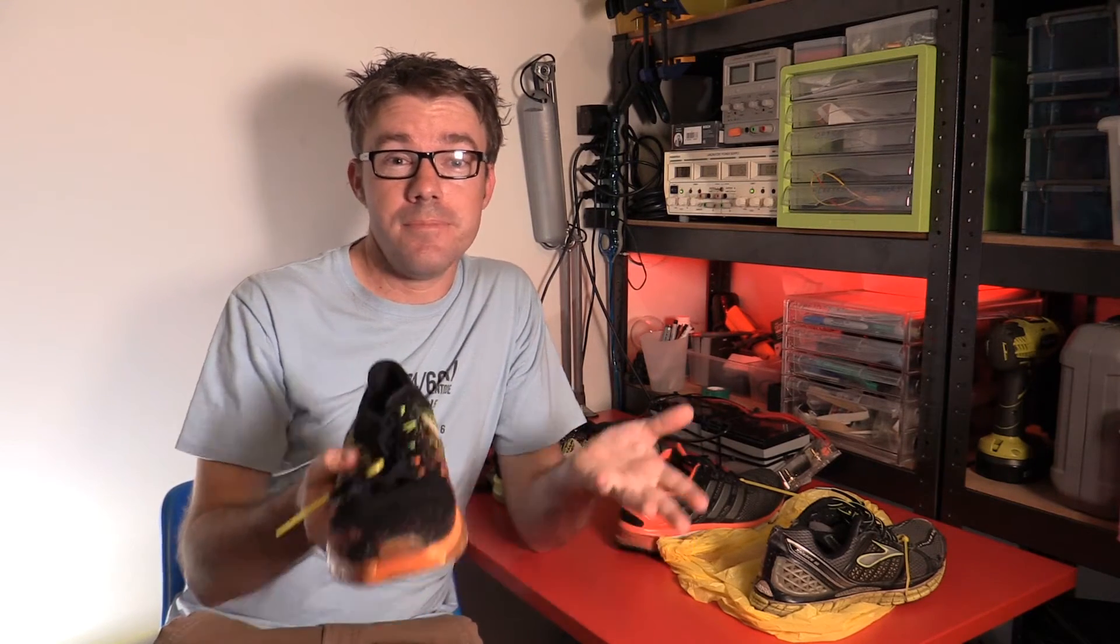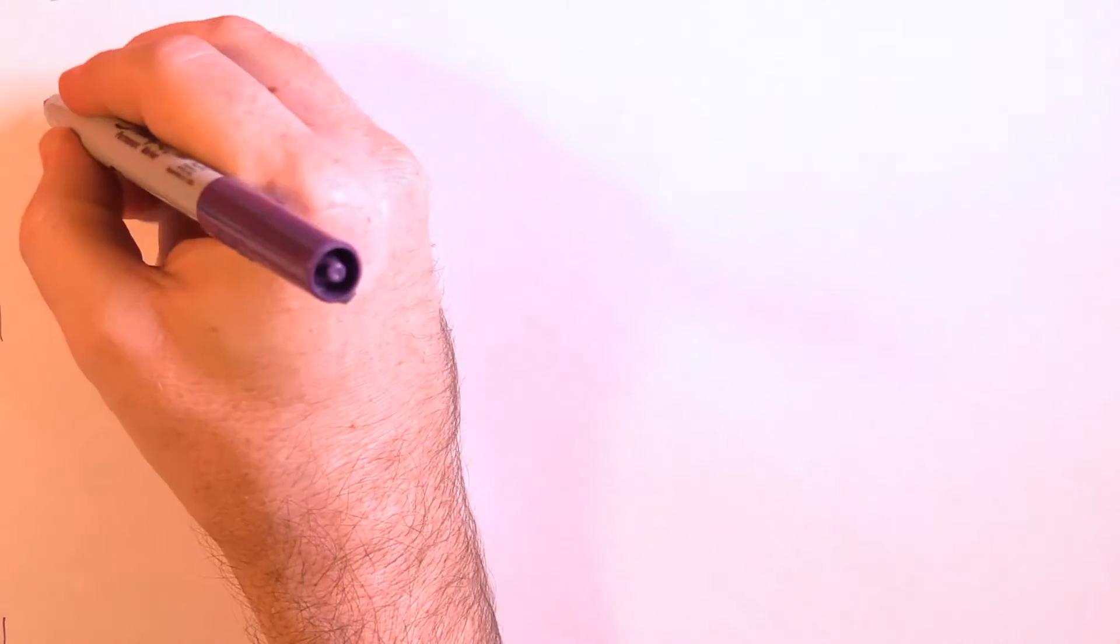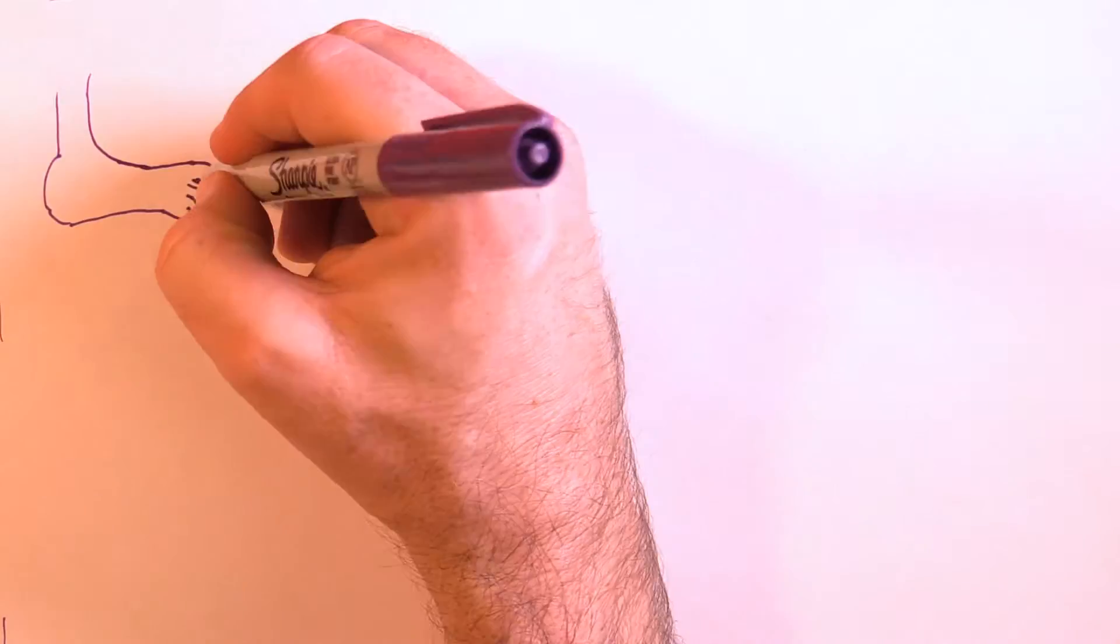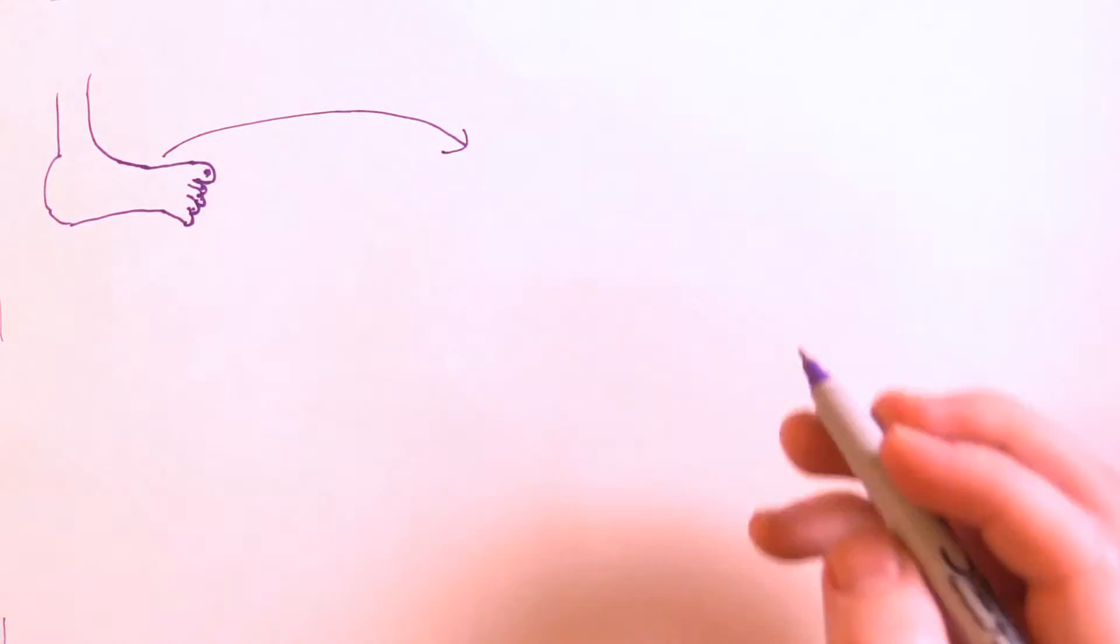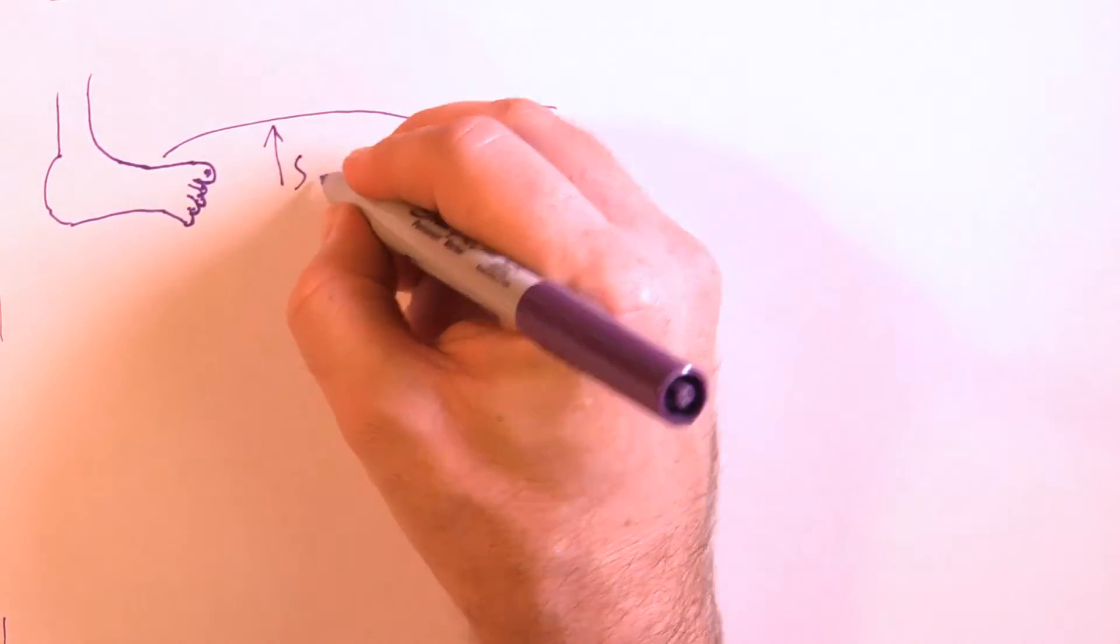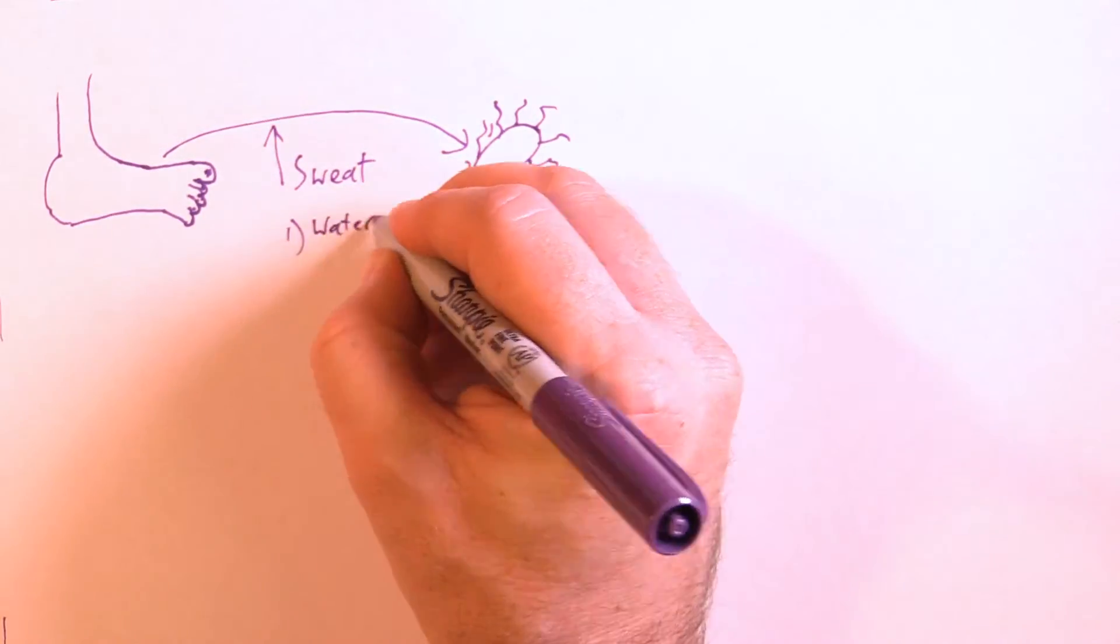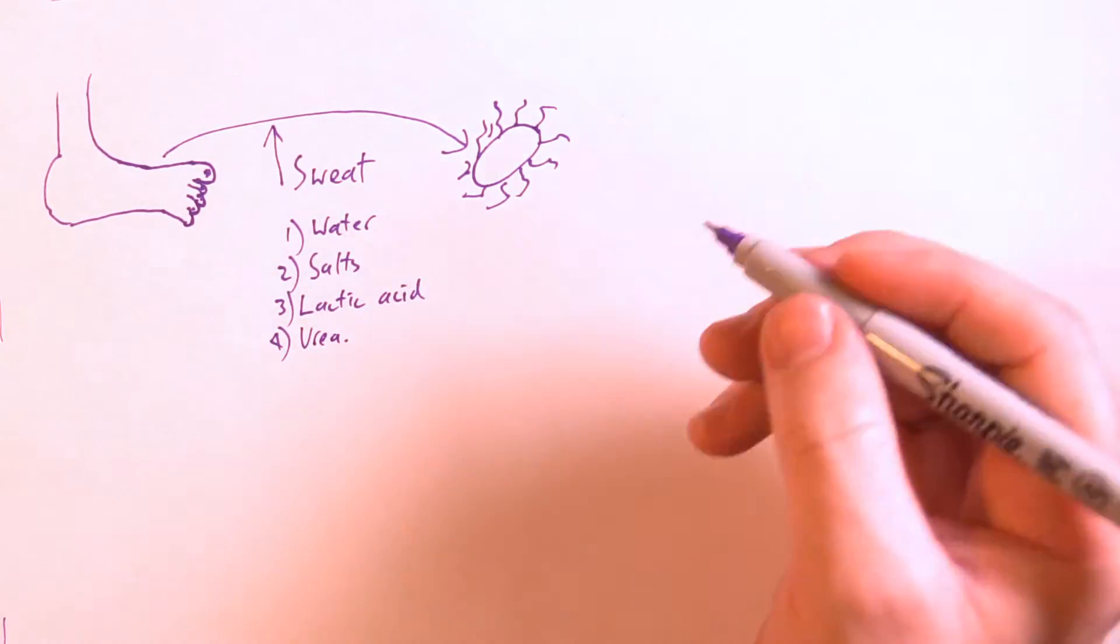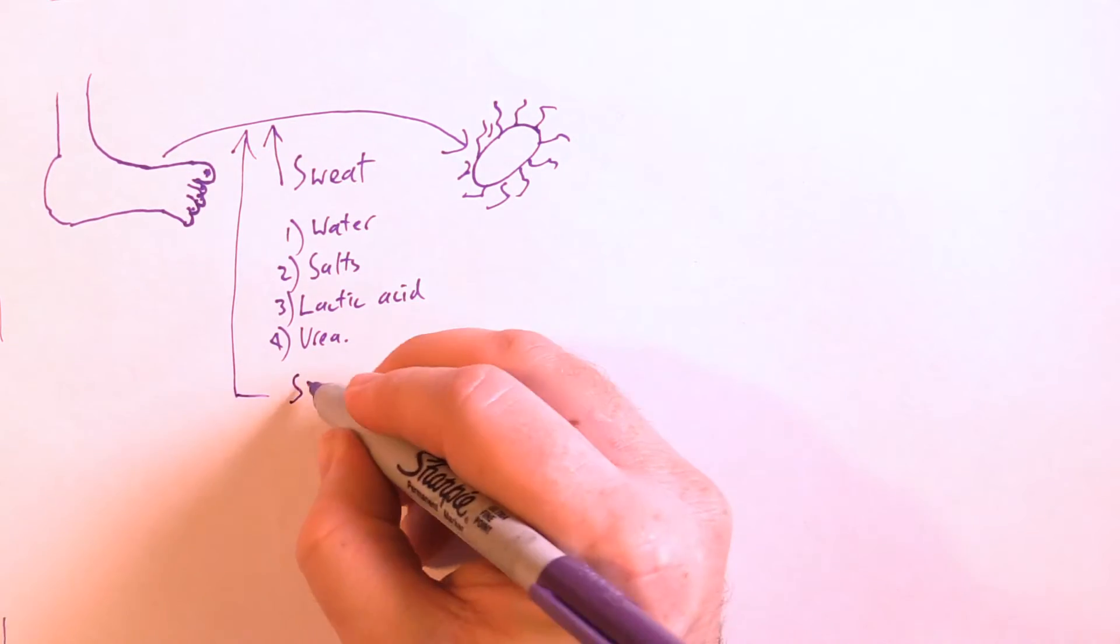So to an extent, propane does actually remove foot odor, but how could that work? How foot odor works is that the feet secrete predominantly sweat. So sweat contains water, salts, lactic acid, urea, and other carbon-based compounds. The second thing that comes off feet is skin bits which contain proteins which often get broken down to amino acids.